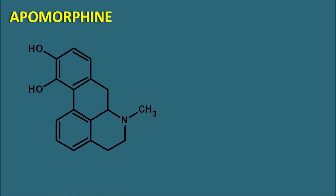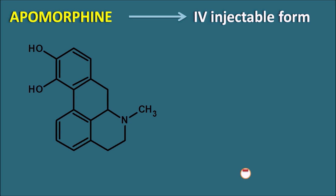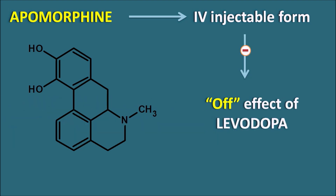The second drug is apomorphine, which has a morphine-like structure where the ring is opened. Apomorphine is an anhydrous derivative of morphine and does not have any analgesic activity. Instead, this drug retains the emetic activity of morphine. Apomorphine is given as an IV injectable form and particularly controls the off-effects produced by levodopa. Whenever levodopa is given, levodopa levels within the CNS can fluctuate, producing on and off effects — 'on' being improvement of motor function and 'off' being motor rigidity resembling Parkinson's-like symptoms. To control these off-effects, apomorphine IV injectable form is given.